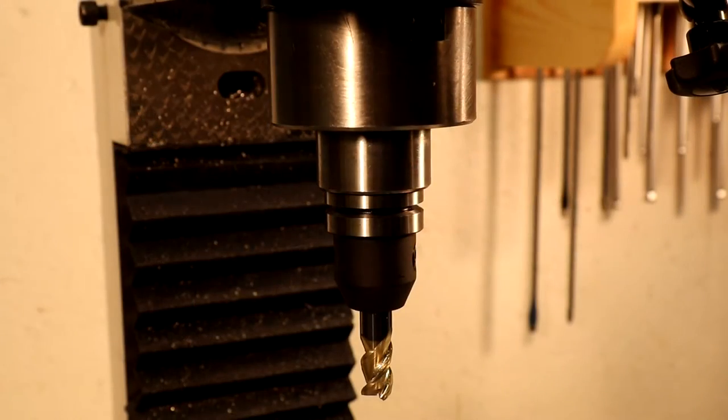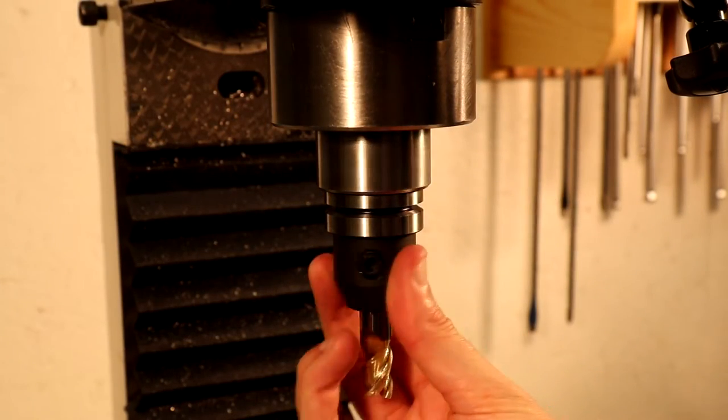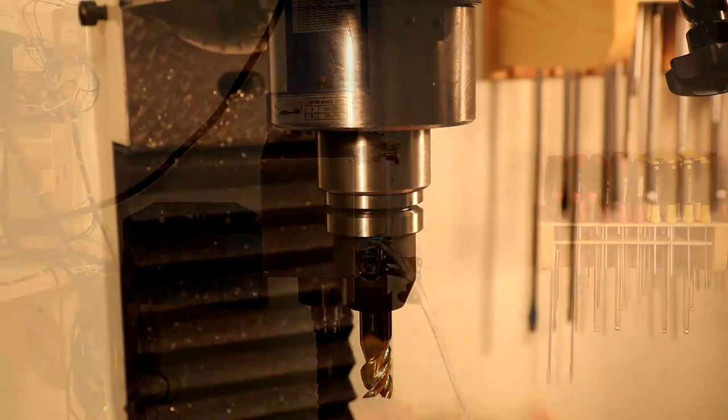The PM25 mill that I received has no flats on the spindle to put a wrench to when tightening a drill bar. Apparently the older and newer copies have the flats.